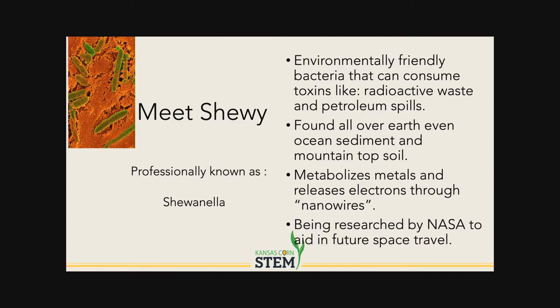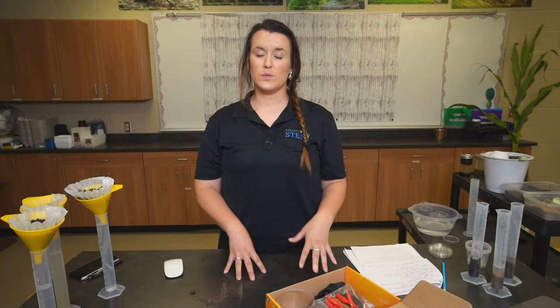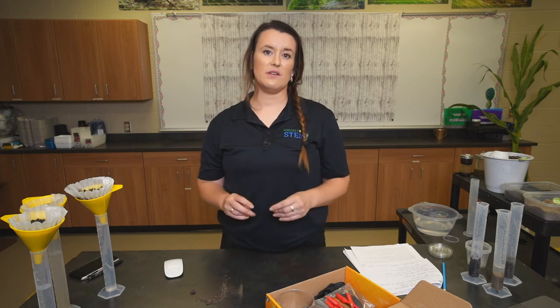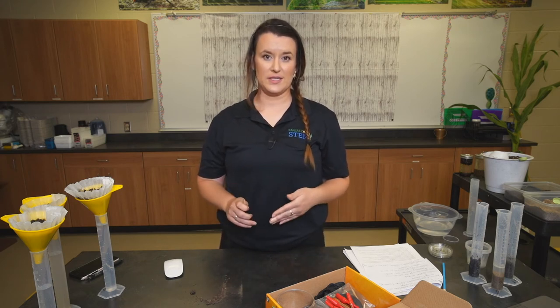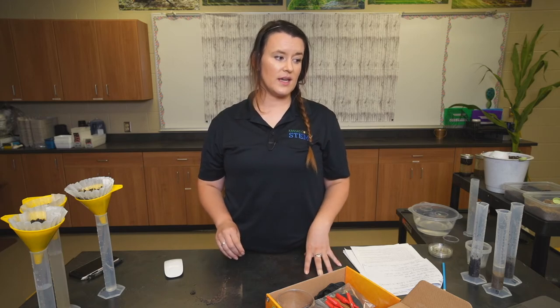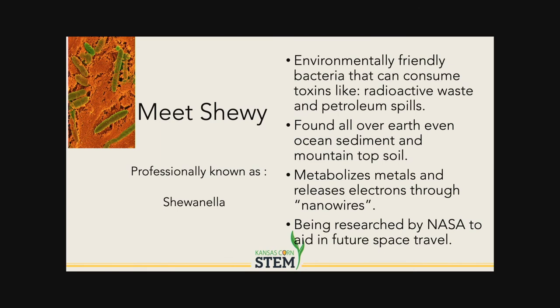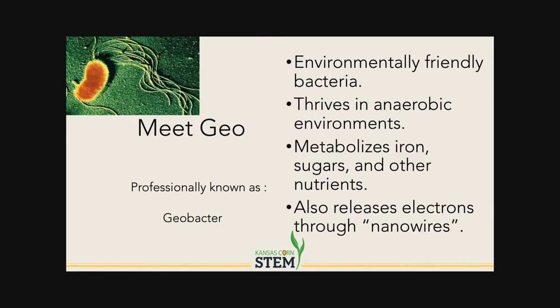Meet Shoei — the abbreviated name MudWatts uses in much of its curriculum, a friendly way to explain this particular microorganism. It's an environmentally friendly bacteria that can consume toxins like radioactive waste and petroleum spills. Found all over the earth, even in ocean sediment and mountain tops, it metabolizes metals and releases electrons through nanowires, and is being researched by NASA for potential aid in future space travel. You'll also work with Geobacter, or Geo — another environmentally friendly bacteria that thrives in anaerobic environments, metabolizes iron, sugars, and nutrients, and also releases electrons through nanowires.